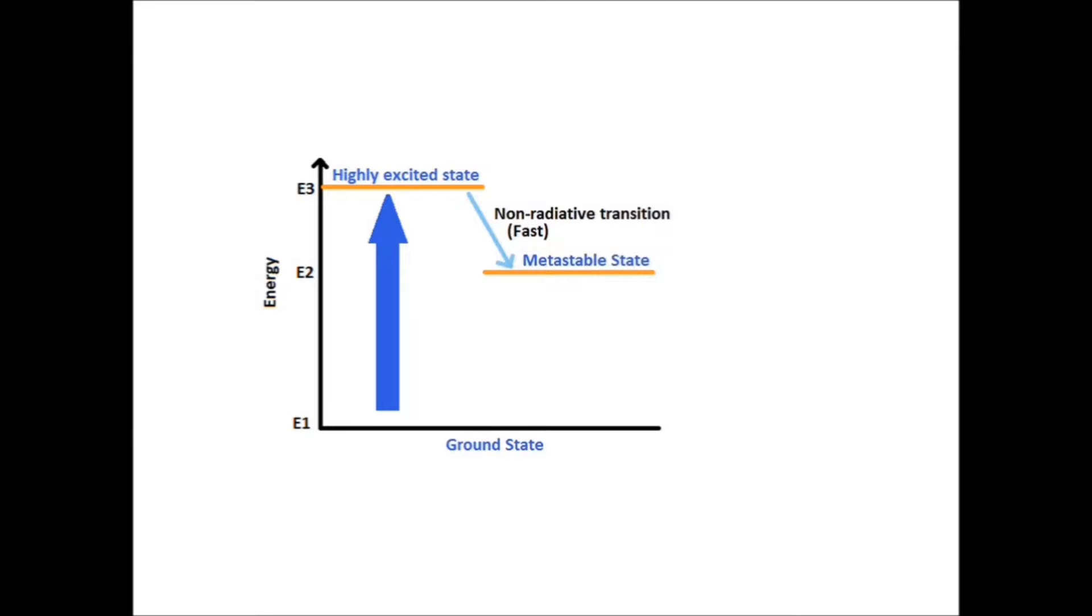Then, fast non-radiative transition occurs to a metastable state. As this happens quickly, atoms accumulate in the metastable state, creating a population inversion.